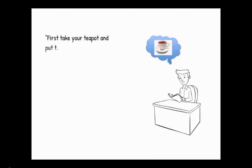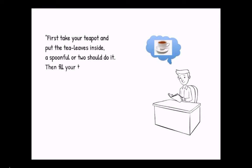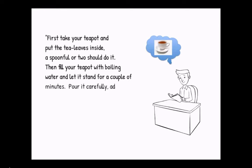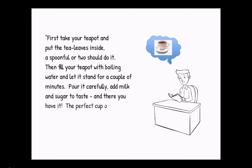First, take your teapot, put the tea leaves inside. A spoonful or two should do it. Then fill your teapot with boiling water, let it stand for a couple of minutes. Pour it carefully, add milk and sugar to taste, and there you have it. The perfect cup of tea.